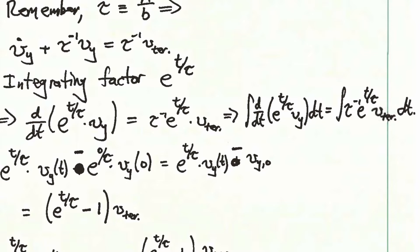Integrating this equation from t equals 0 to some time t, the left-hand side gives e to the t over tau times vy of t minus e to the 0 over tau times vy of 0. Since e to the 0 is just 1, this becomes e to the t over tau times vy of t minus vy of 0. The right-hand side integrates to give the terminal velocity times the quantity e to the t over tau minus 1.